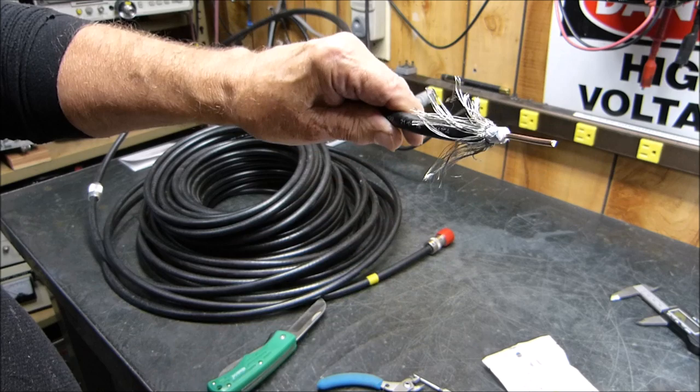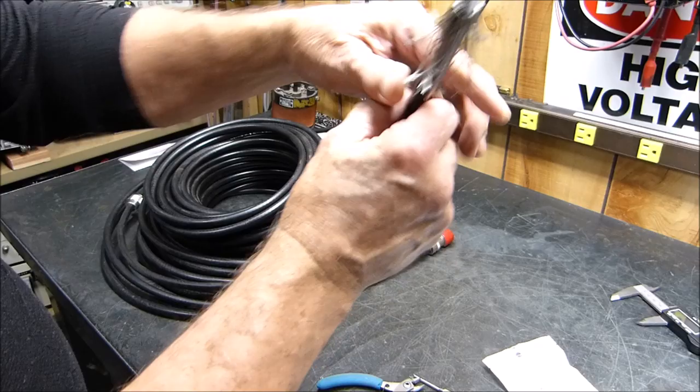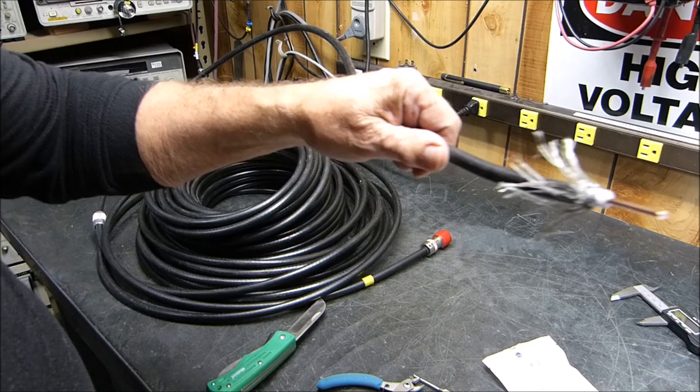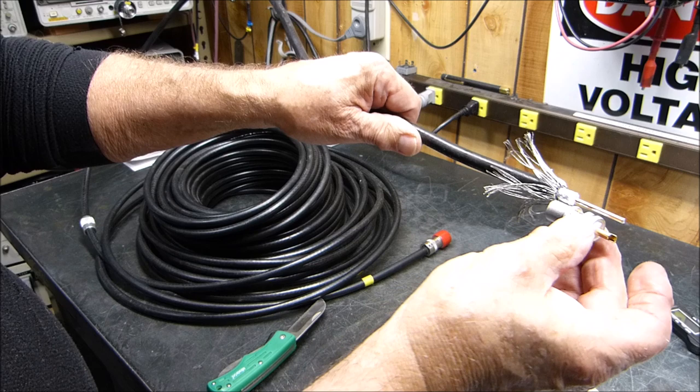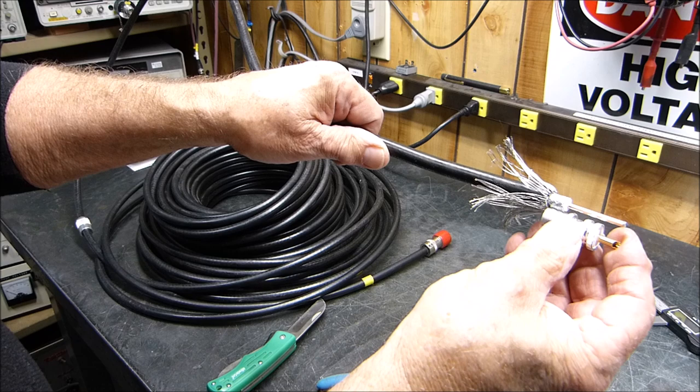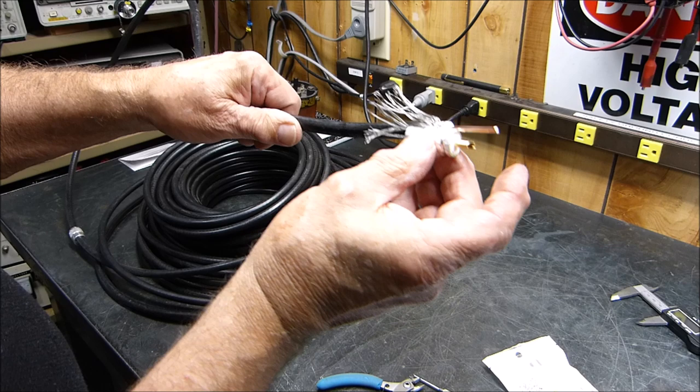Once you get that done, here kind of comes the hard part if you want to call it. What you got to do is you got to screw this thing over this braid and the plastic. You can do it but it's not easy. The other video that I watched, he put it between two boards to clamp it.